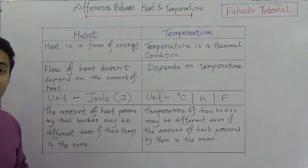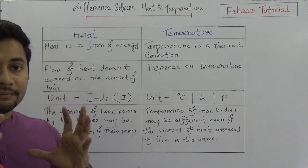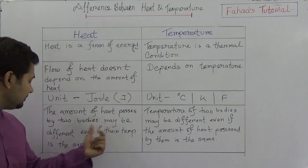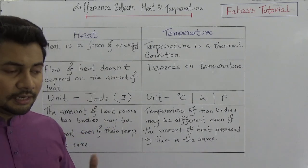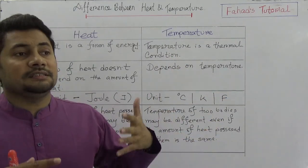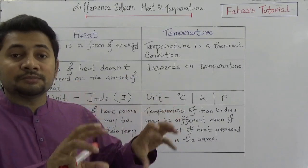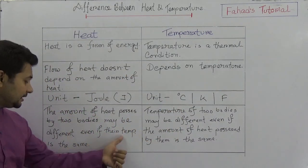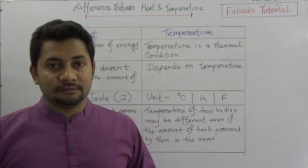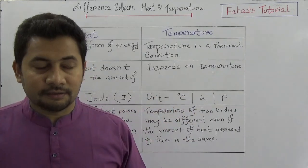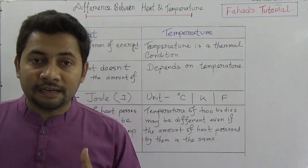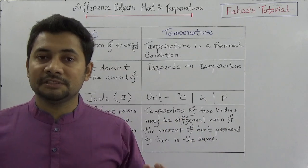Last but not least, the amount of heat possessed by two bodies may be different even if their temperature is the same. For example, consider two different bodies — one made of iron and one made of copper. Suppose a body of iron has a mass of 5 kg at a temperature of 30 degrees Celsius, and a body of copper has a mass of 10 grams also at 30 degrees Celsius.